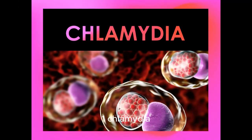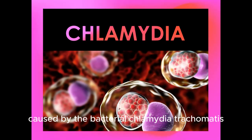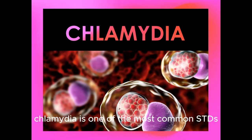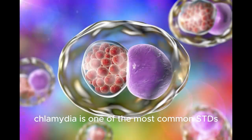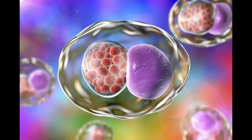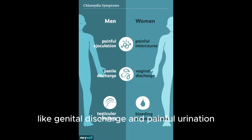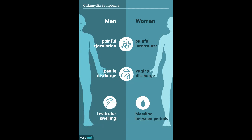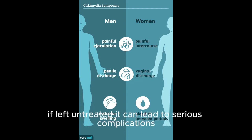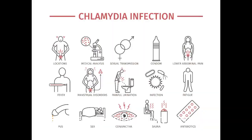1. Chlamydia, caused by the bacterium Chlamydia trachomatis, is one of the most common STDs. It can infect both men and women and often presents with symptoms like genital discharge and painful urination. If left untreated, it can lead to serious complications such as pelvic inflammatory disease, PID, and infertility.